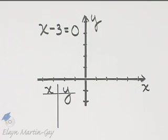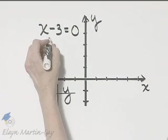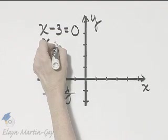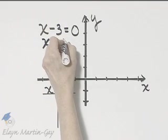To graph X minus 3 equals 0, let's write it in standard form. X equals 3.